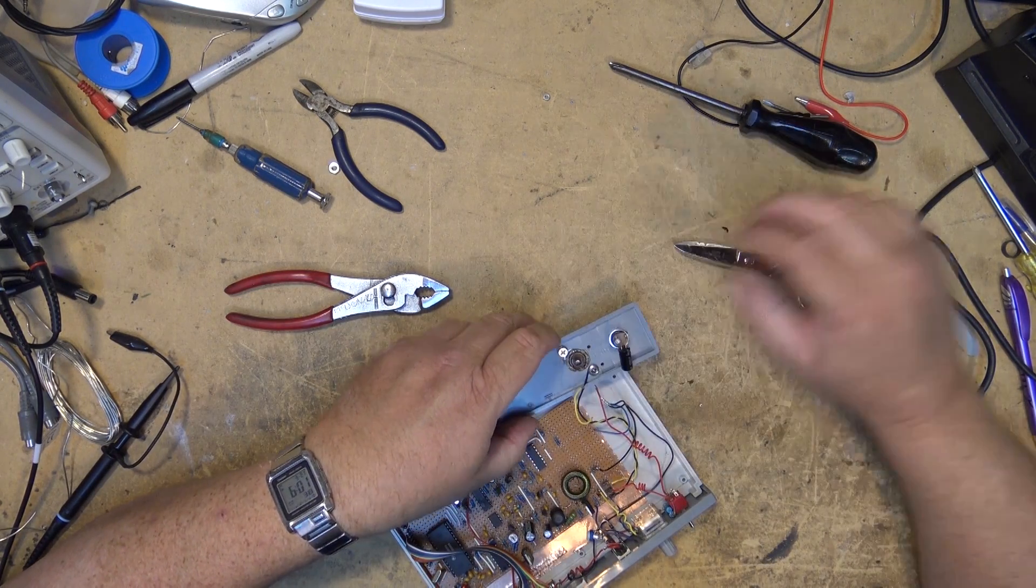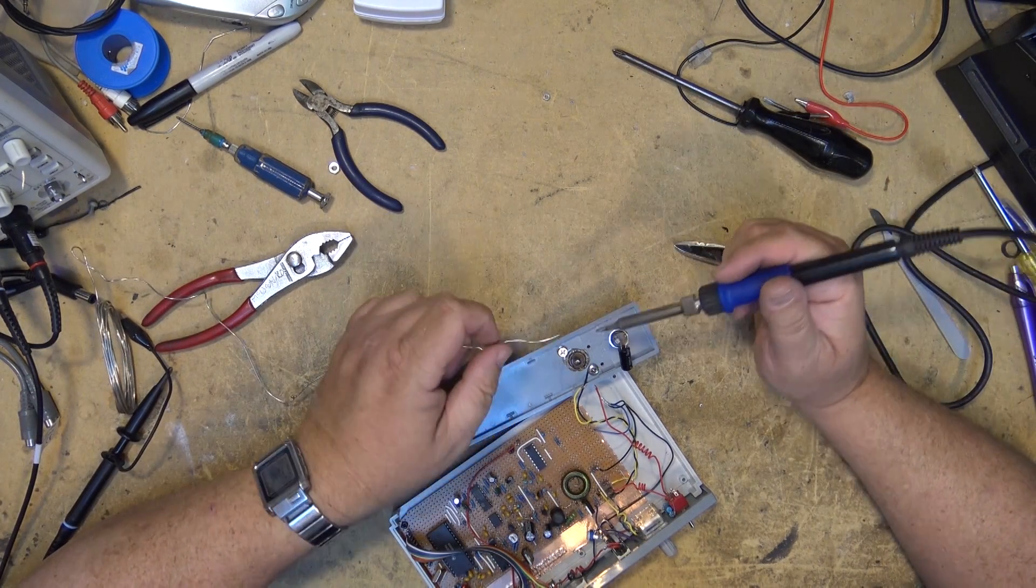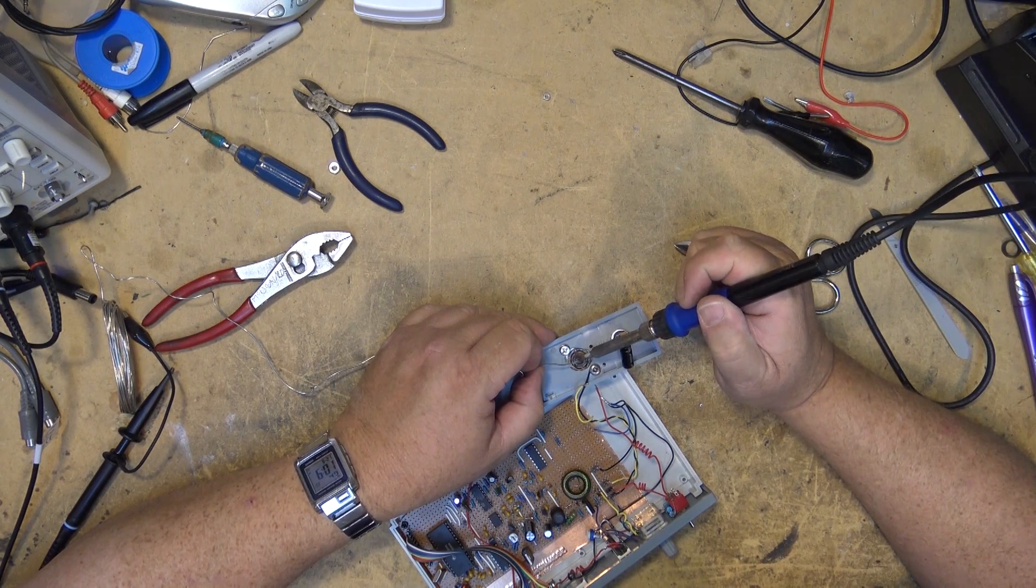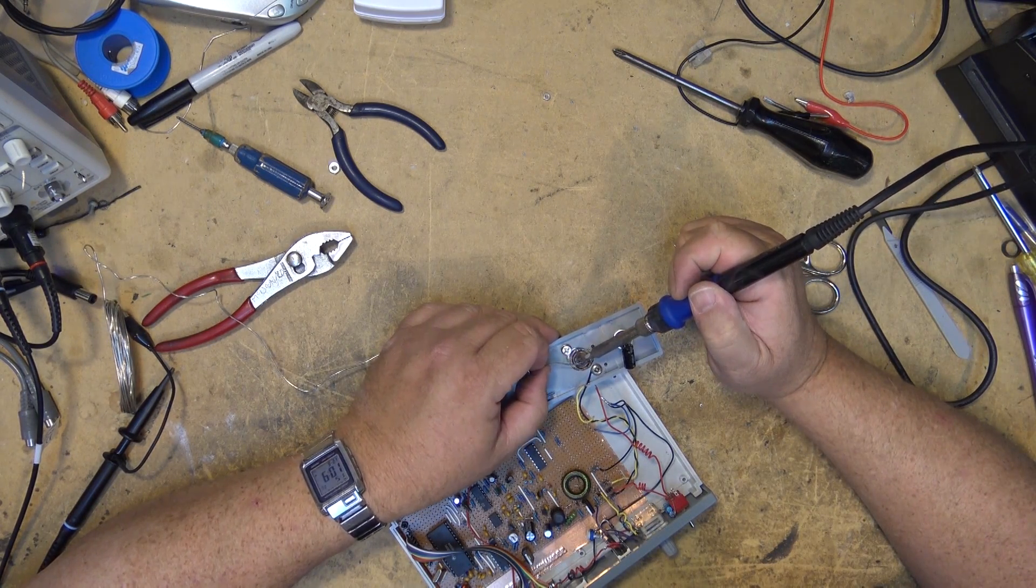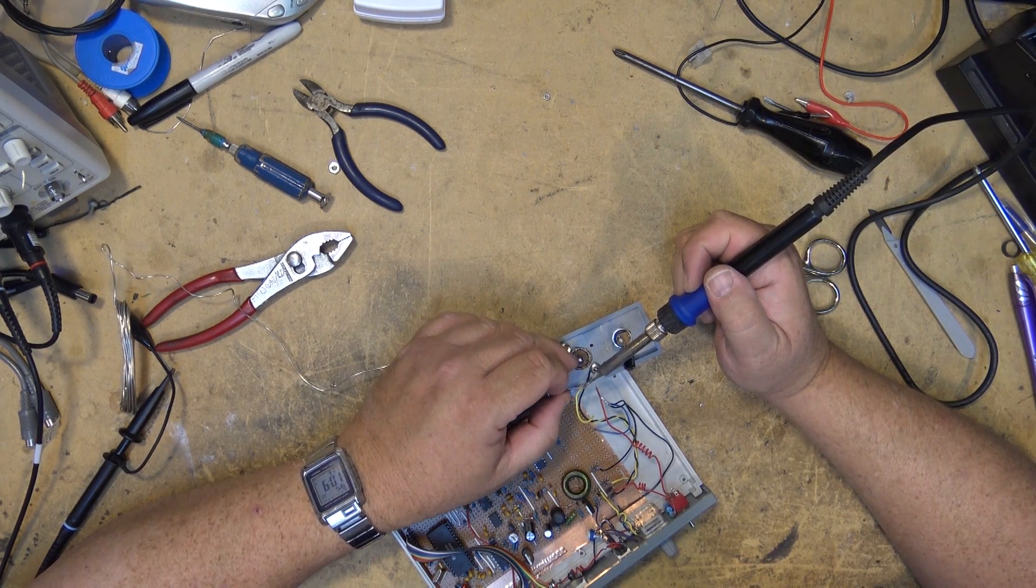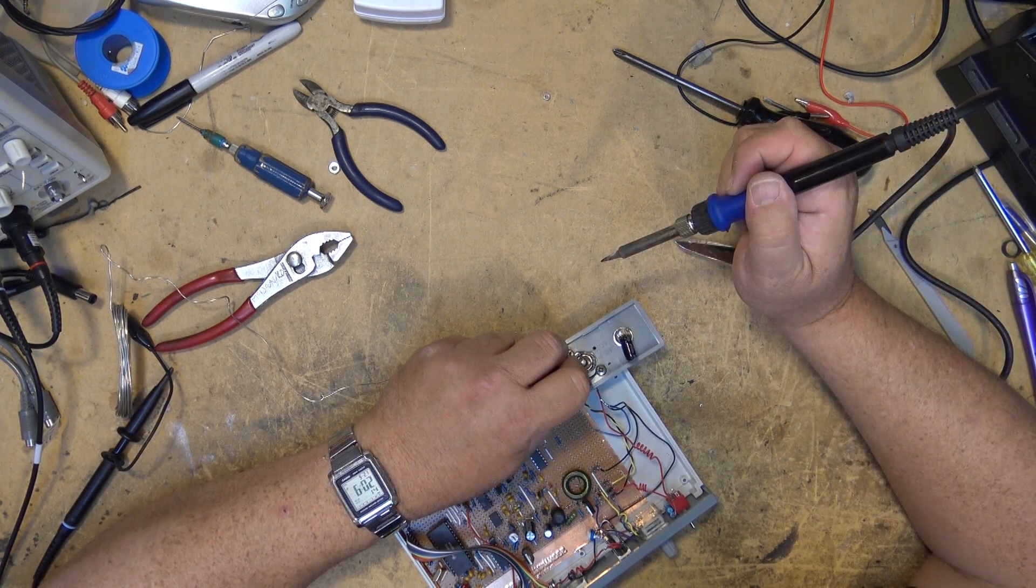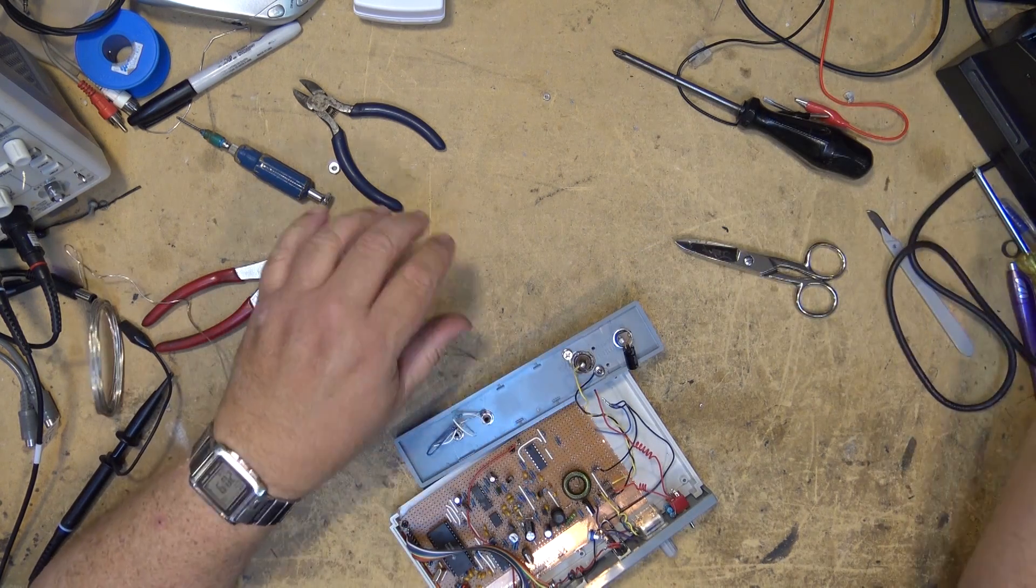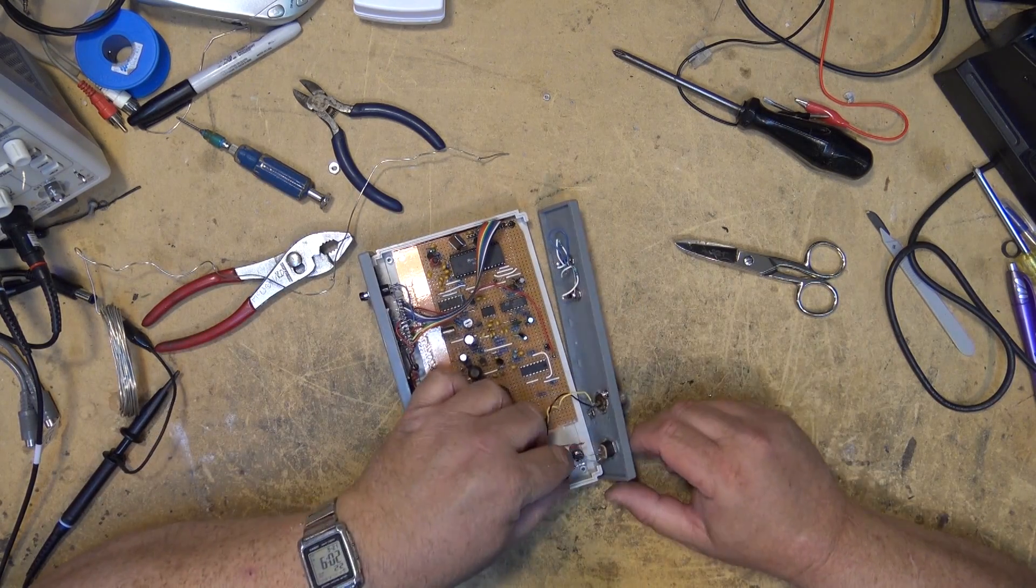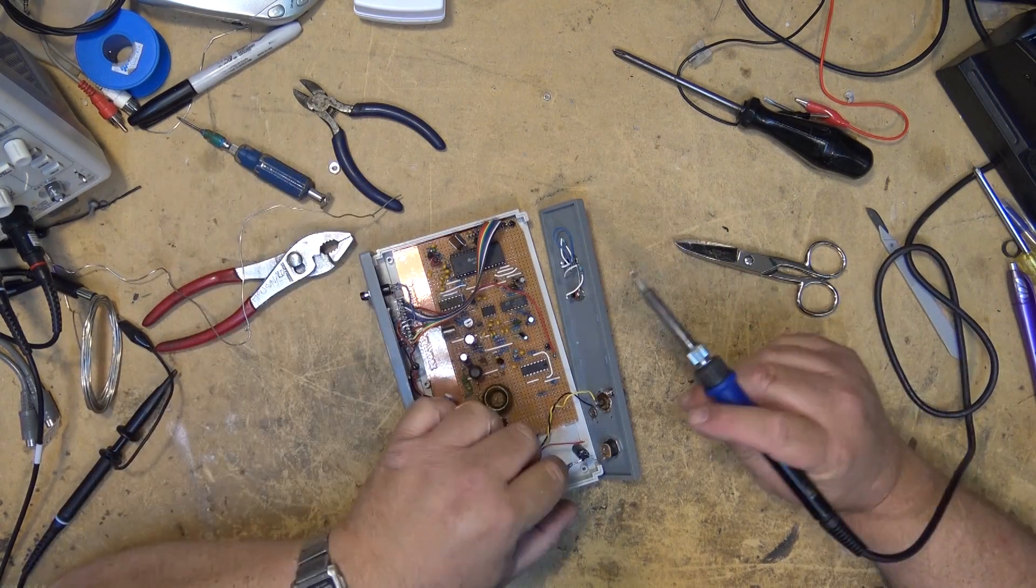Now we'll attach the main center connector. Oh great I grabbed some lead-free solder. Oh well I guess I'll have to use it. This is what I picked up first. Okay there's our center conductor. We'll reconnect our power wires here and our audio input. And I'll take this and connect it up to an antenna and we'll see how it performs.